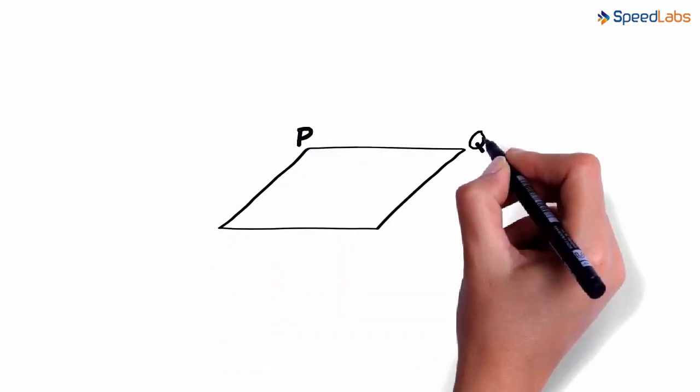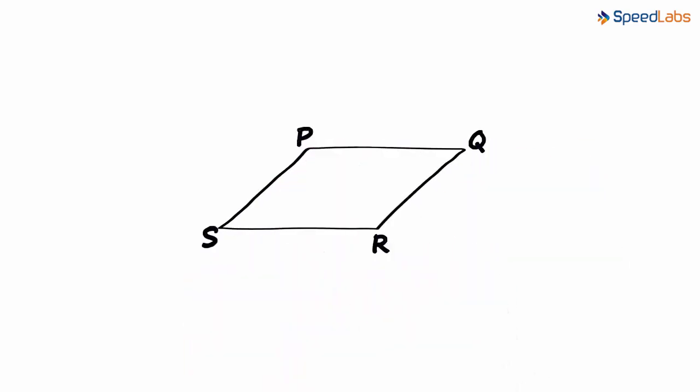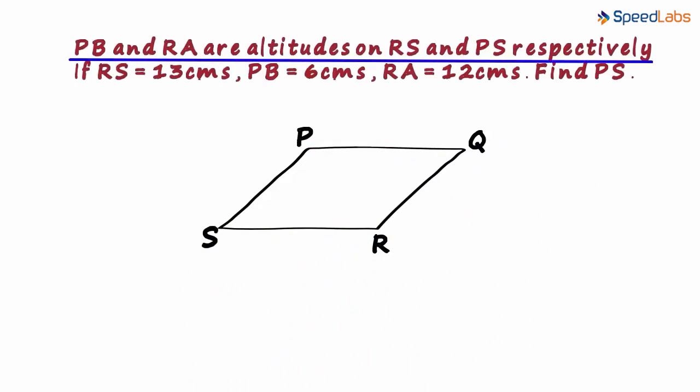This quadrilateral PQRS is a parallelogram. And we have been given the following: PB and RA are altitudes on RS and PS respectively.